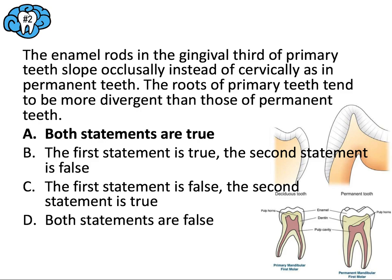We can see the occlusally sloping enamel rods in the deciduous tooth, and how the roots of the primary teeth tend to be more divergent than those in permanent teeth.